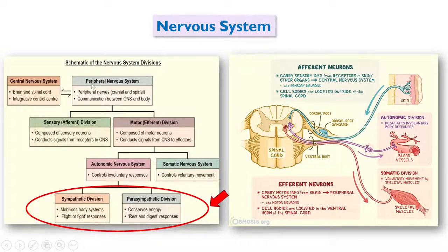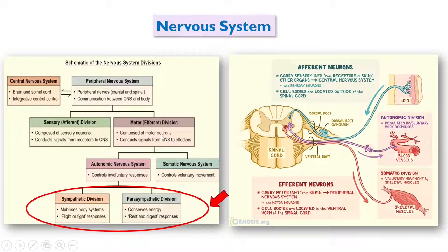The central nervous system consists of the brain and spinal cord. The peripheral nervous system — cranial and spinal peripheral nerves — communicates between the central nervous system and the body. The peripheral nervous system is divided into a sensory afferent division, which senses from skin, eye, smell etc., and a motor efferent division. Sensory neurons conduct signals from receptors to the brain, while motor neurons conduct signals from the brain to the effectors such as muscles.